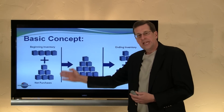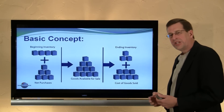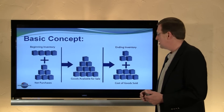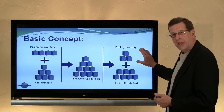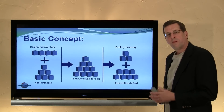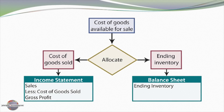The aggregation of beginning inventory and purchases gives us the goods available for sale. Our challenge is then to take that total amount assigned to goods available for sale and decide how much is included in ending inventory for the balance sheet and how much should be reported as cost of goods sold on the income statement. It's really an allocation problem. The cost of goods available for sale must be allocated either to cost of goods sold or to ending inventory — cost of goods sold appearing on the income statement, with sales minus cost of goods sold giving you gross profit, or ending inventory appearing on the balance sheet.